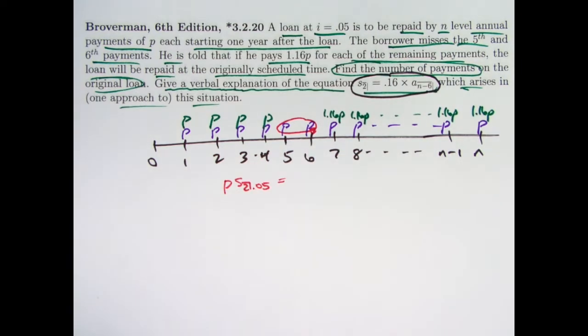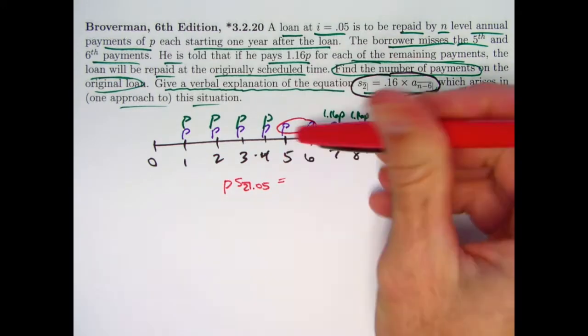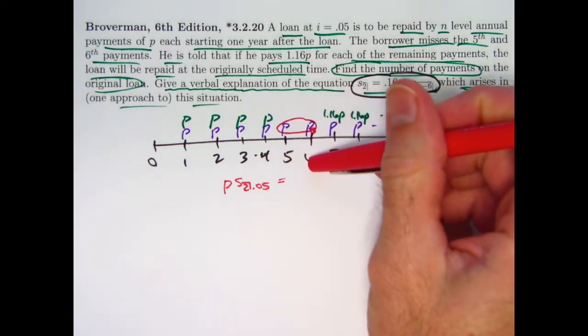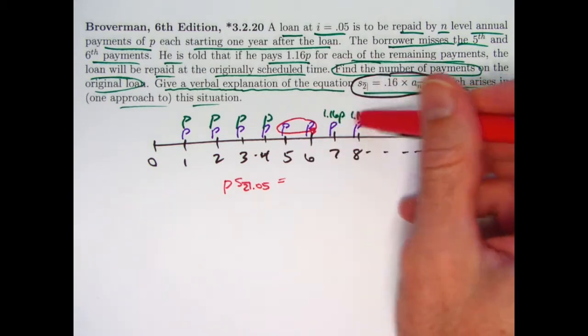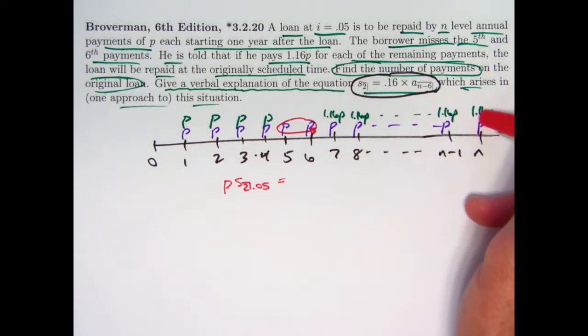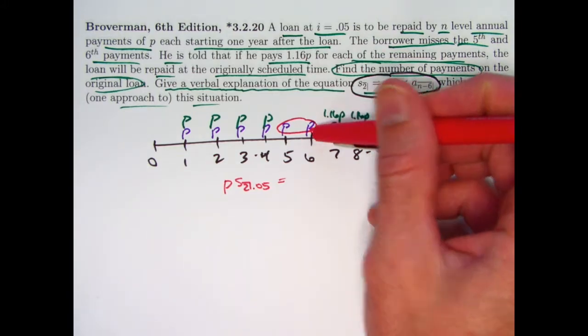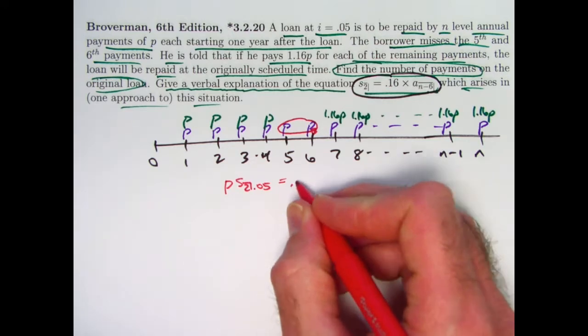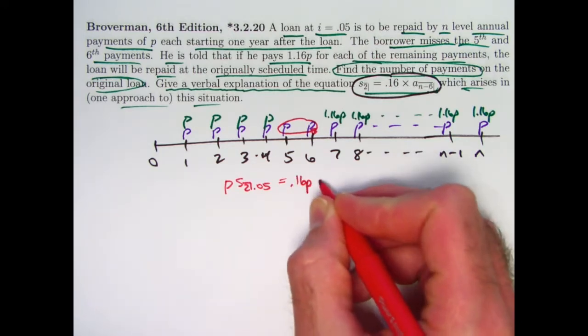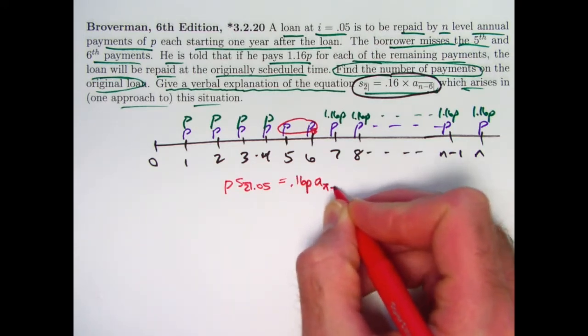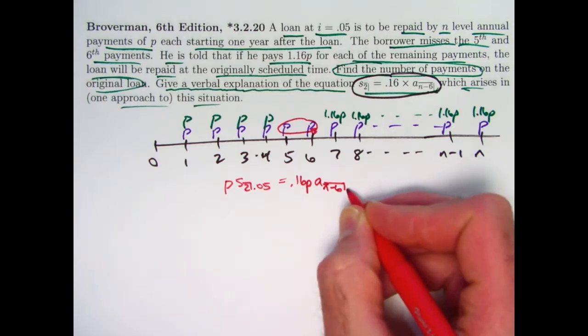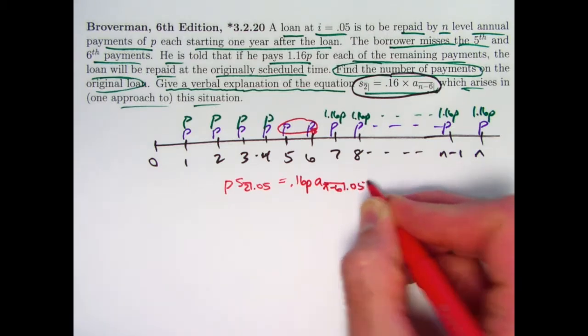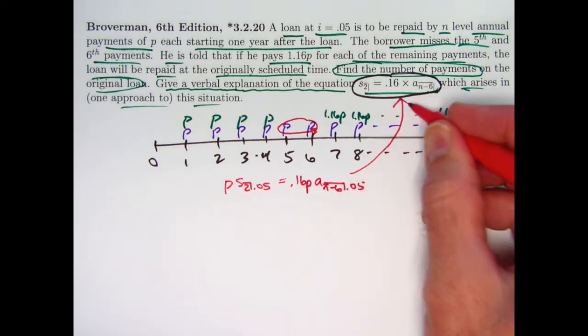I hope it makes some sense that the value of these two payments at time 6 should be the present value of the extra in these payments, in these n minus 6 payments at time 6. And what would that present value be? That would be 0.16 times P times a_n minus 6.